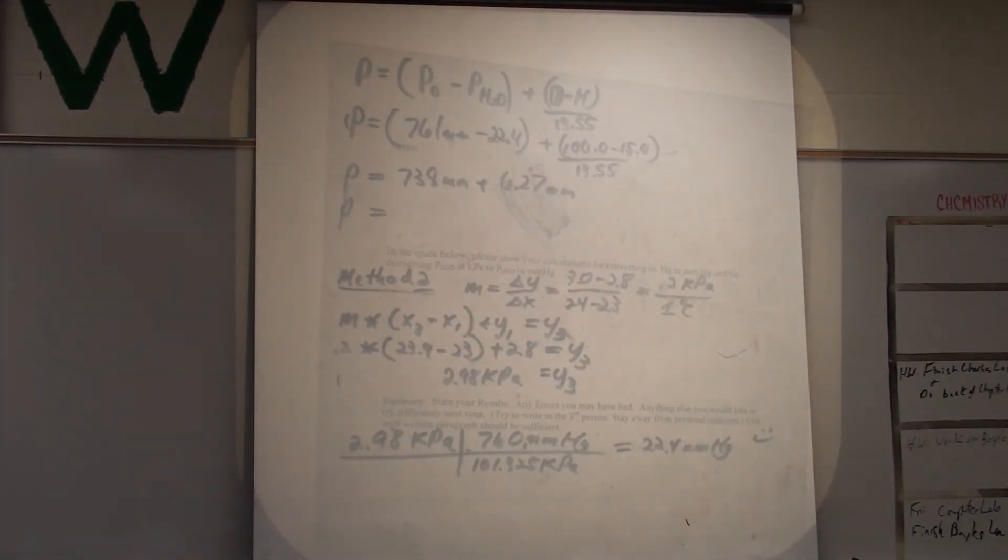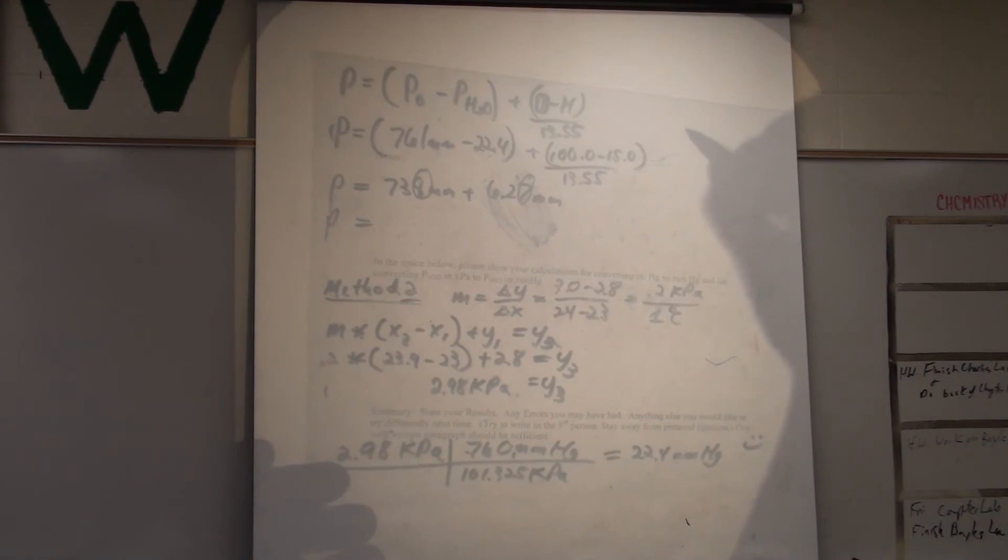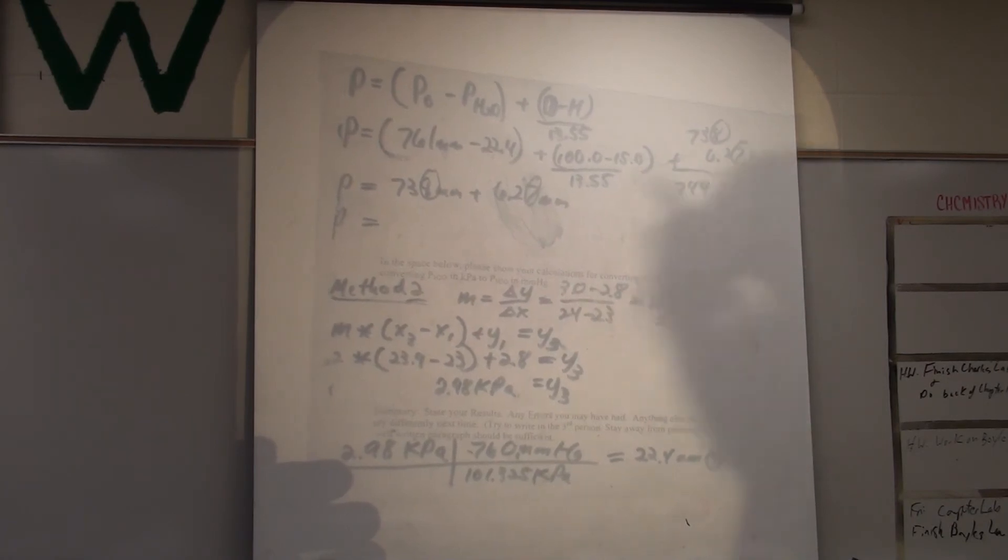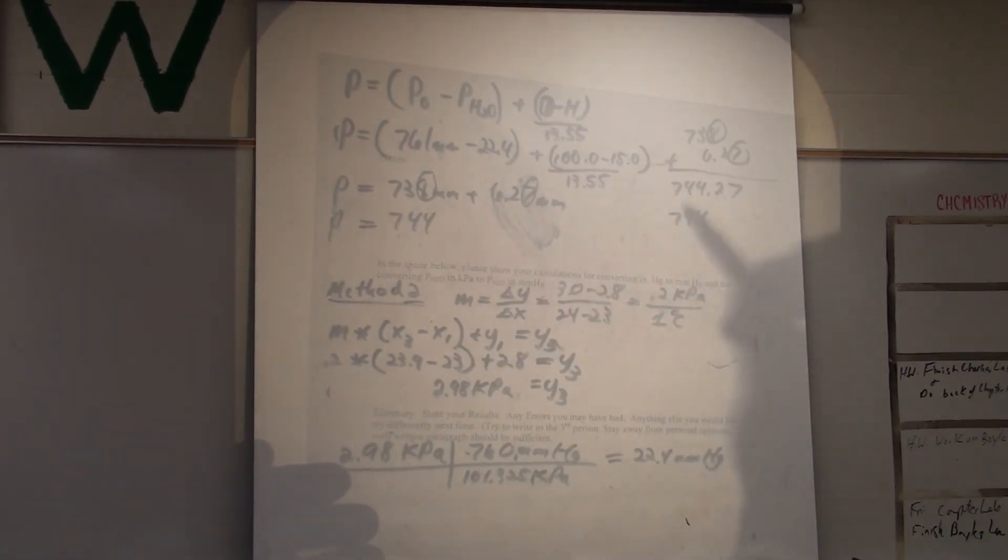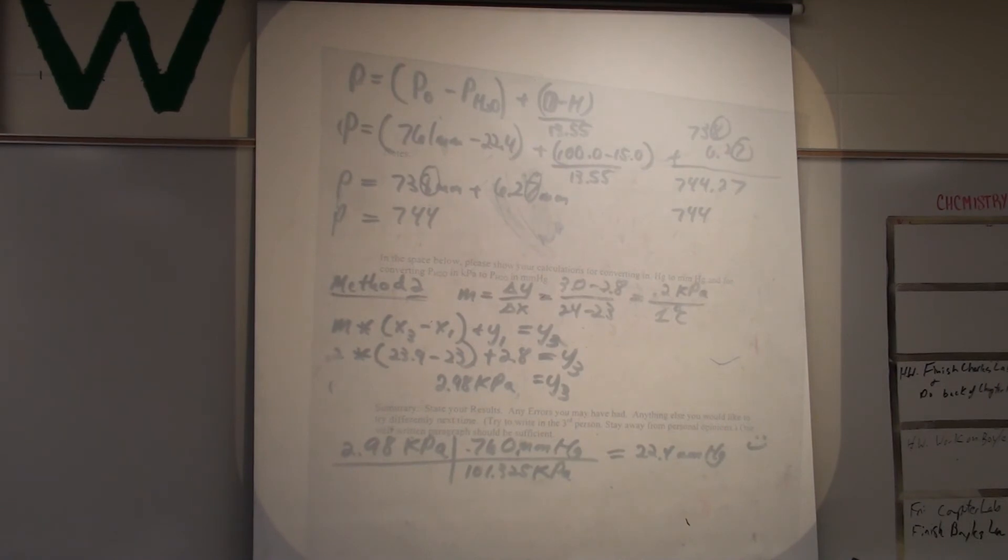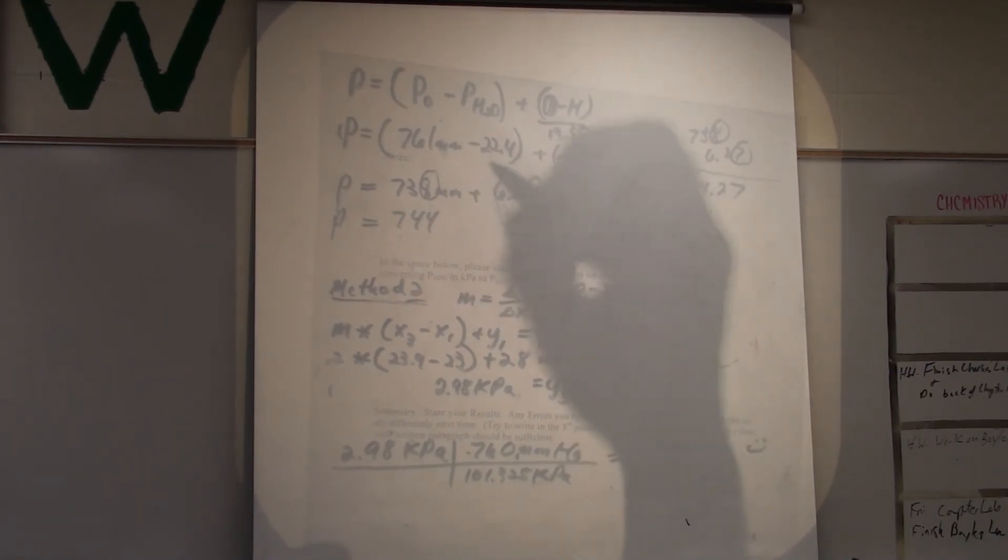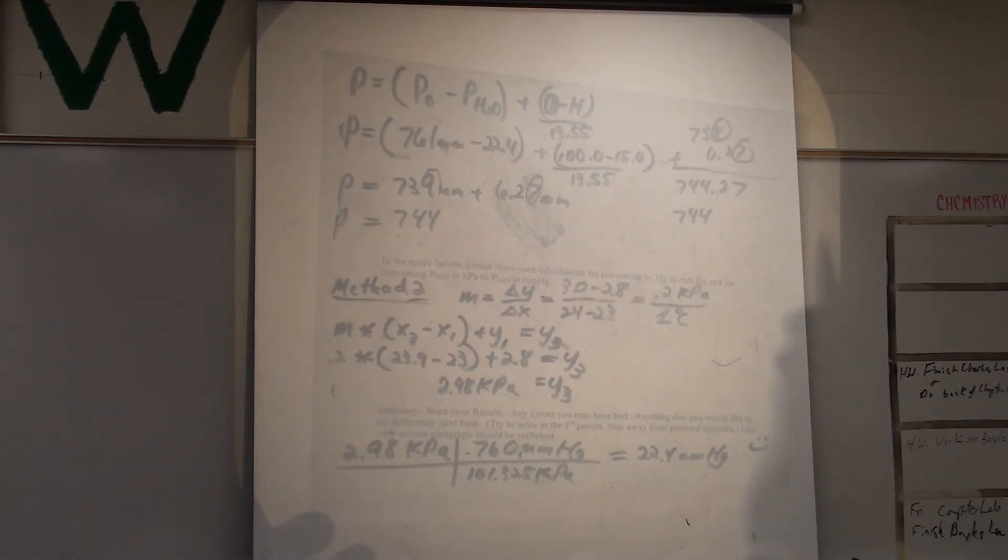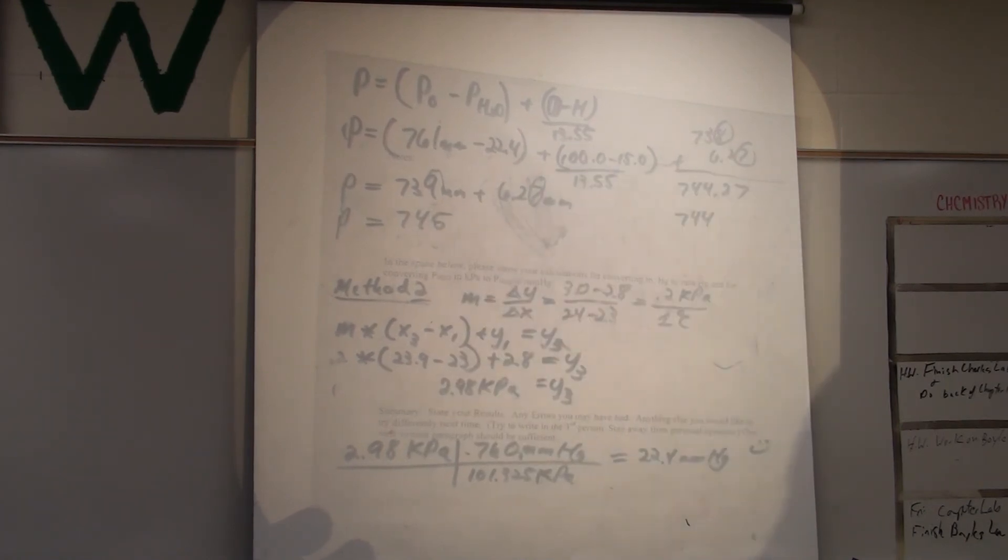So, my pressure becomes 738 plus 6.27. There's my guess. So, when I add, I round to the guess furthest to the left. So, the guess furthest to the left is in the ones place. So, I'm going to round to the ones place. Jamie was right. You know better not to make me look bad on camera. 739. So, I'll go add that mistake up there. So, then this becomes 745 millimeters of mercury.